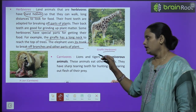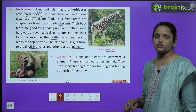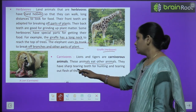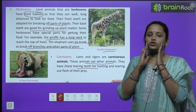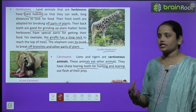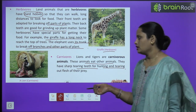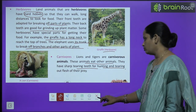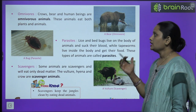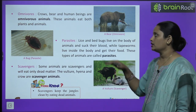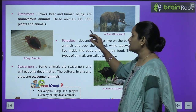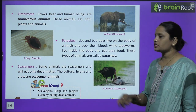Next come carnivores. Lion and tiger are carnivorous animals that eat other animals. They have sharp tearing teeth — canines that are very pointed — to tear flesh and hunt prey. Next come omnivores, which are animals that eat both plants and flesh. Crow, bear, and human beings are omnivore animals.